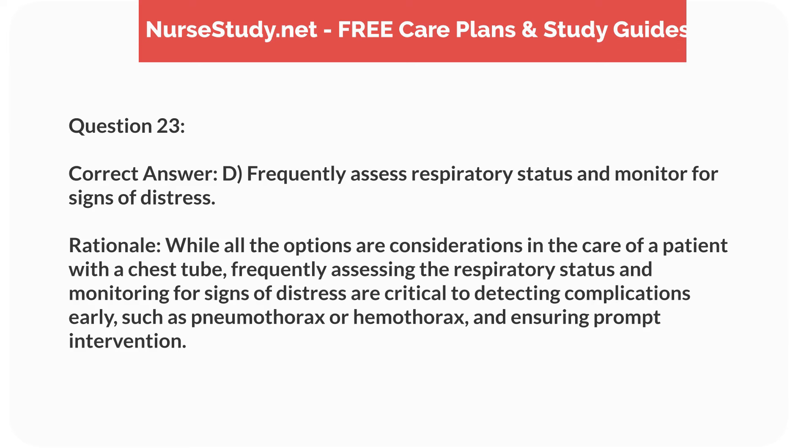Correct answer: D. Frequently assess respiratory status and monitor for signs of distress. Rationale: While all options are considerations in the care of a patient with a chest tube, frequently assessing the respiratory status and monitoring for signs of distress are critical to detecting complications early, such as pneumothorax or hemothorax, and ensuring prompt intervention.